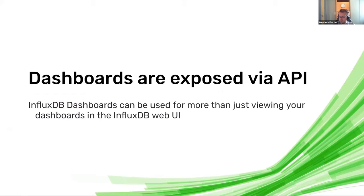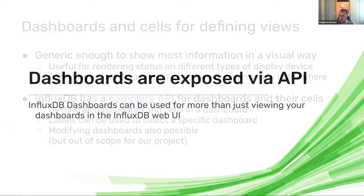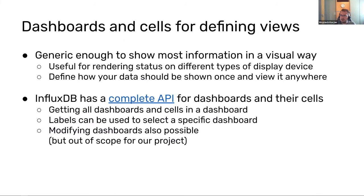The key takeaway I want everyone to remember is: dashboards are exposed via API, meaning that dashboards can be used by way more than just viewing them in the InfluxDB web UI. Dashboards and their cells are a way of defining views, and they're generic enough to allow people to show most information in a visual way. InfluxDB 2.0 has a complete API for dashboards and cells, so you can get all the dashboards, list all the cells, and use labels to find your dashboards.